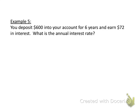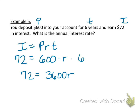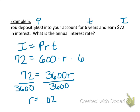Next: you deposit $600 in your account for six years and you earn $72 in interest. What is the rate? We have principal, we have time, and we have interest. Interest always equals principal times rate times time, so 72 equals 600 times R times 6. Using the commutative property, multiply 600 and 6 together to get 72 equals 3600R. Divide both sides by 3600 to solve for R, then change that decimal to a percentage. The rate is equal to 2%.